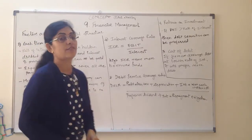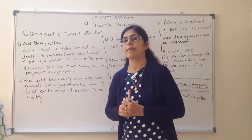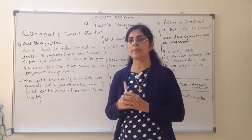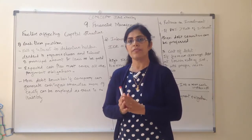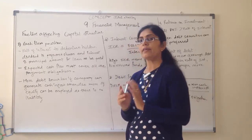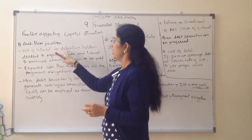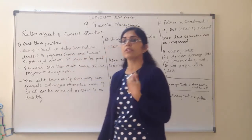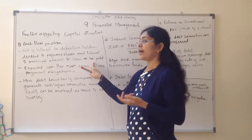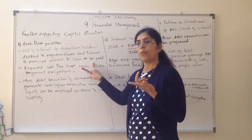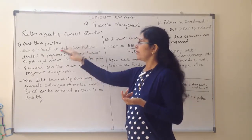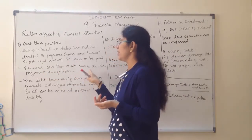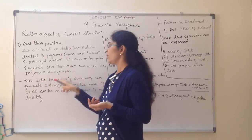The first factor talks about cash flow position. When we are making the structure of the capital, finance is required to do the investment, and the sources of finance — owner's fund and borrowing fund. In cash flow position we have to see the rate of interest we have to pay to debenture holders, dividend to preference shares, and interest and principal amount for the loan taken. This all is an obligation to the company to pay. So the expected cash flow should be able to cover all the payment obligations.